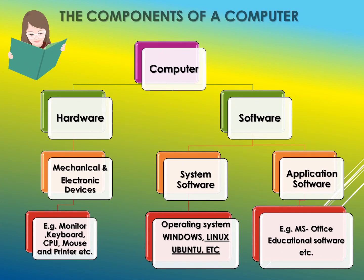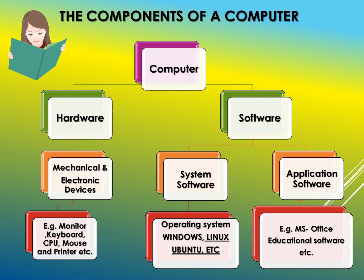Let us see the components of a computer. A computer consists of two components: hardware and software. The computer is made up of mechanical and electronic devices and works on electricity. Examples of hardware are monitor, keyboard, mouse, CPU, and printer.